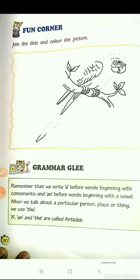Now coming to grammar glee, which is related to articles. In your previous class you studied about articles — that is, use of a, an, and the. Let's revise this. There are five vowels in the English alphabet: a, e, i, o, u. The rest of the 21 letters are consonants. We use 'a' before a singular noun that begins with a consonant. For example: a book — B is a consonant, so a book. A cap — C is a consonant, so a cap. A pencil — P is a consonant, so a pencil.